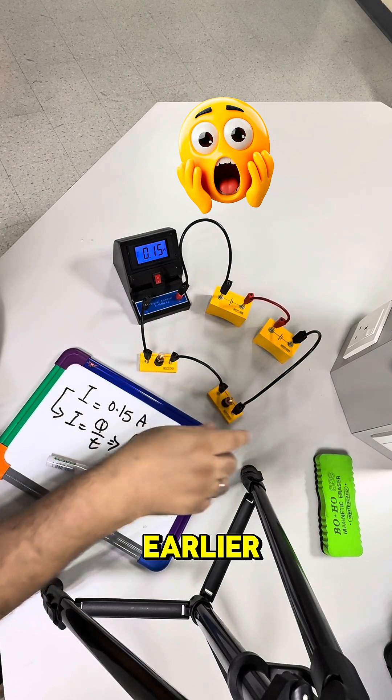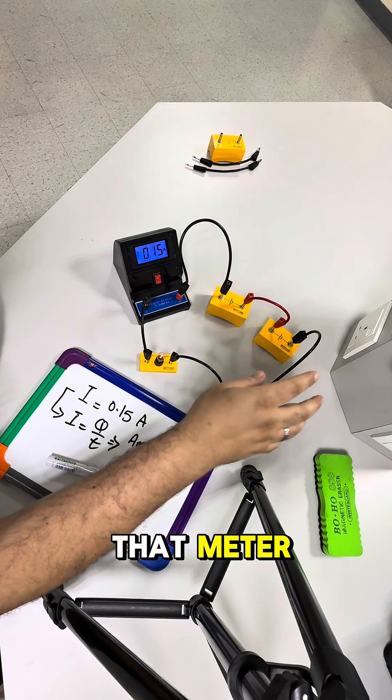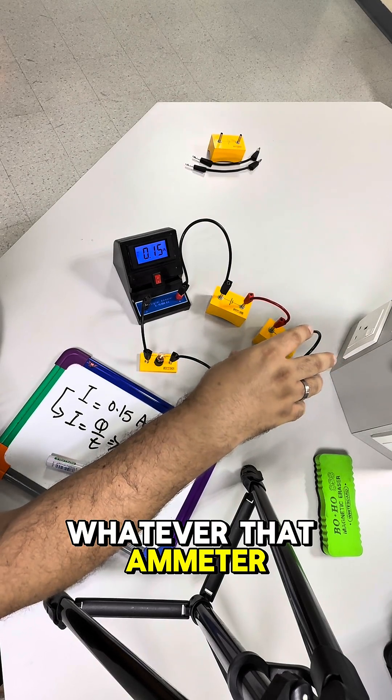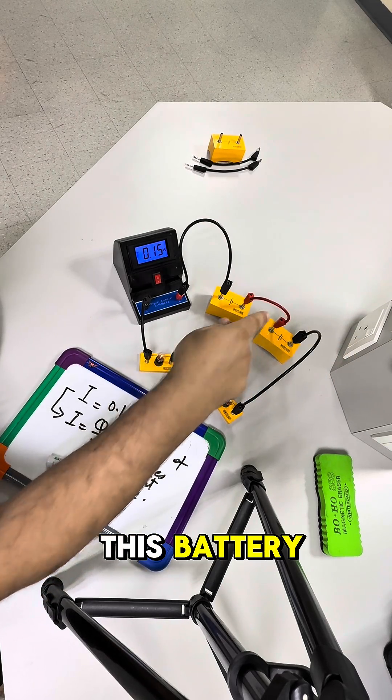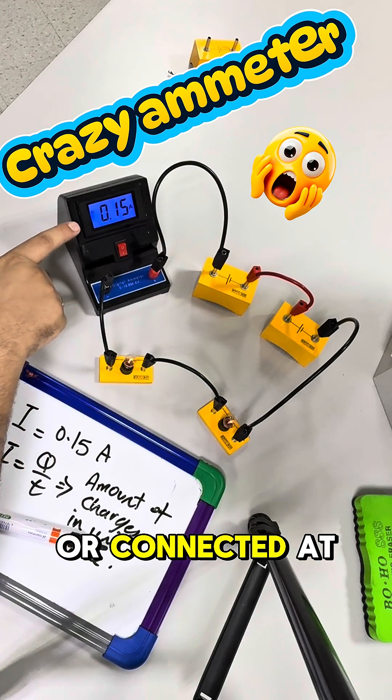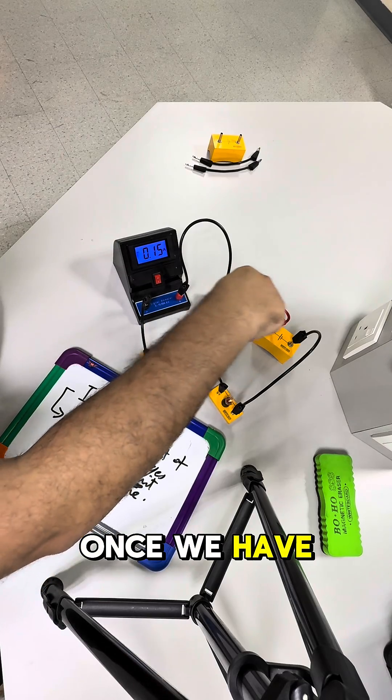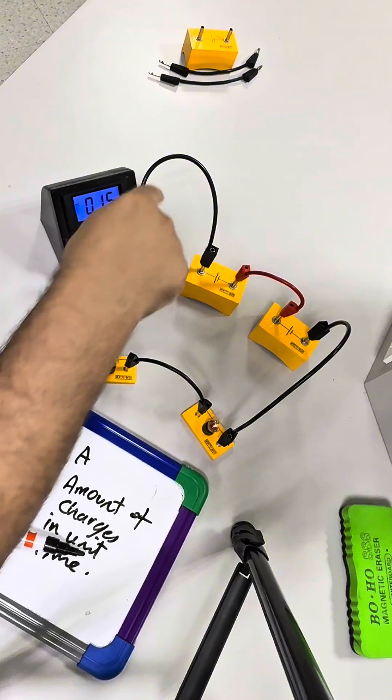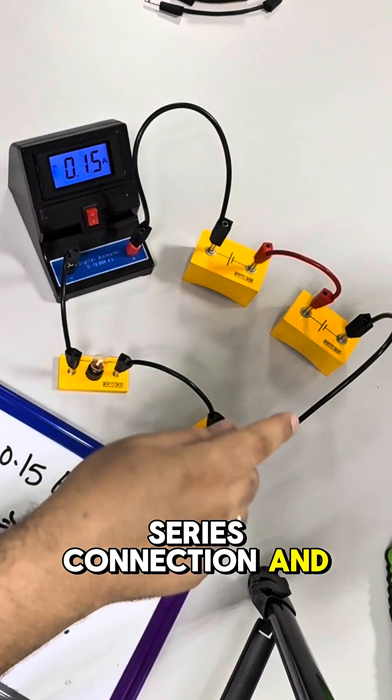As I mentioned earlier, it doesn't matter the position of the ammeter, whether the ammeter is connected close to this battery or connected at the other side. Once we have a complete path which is a series connection, and series in physics means end to end.